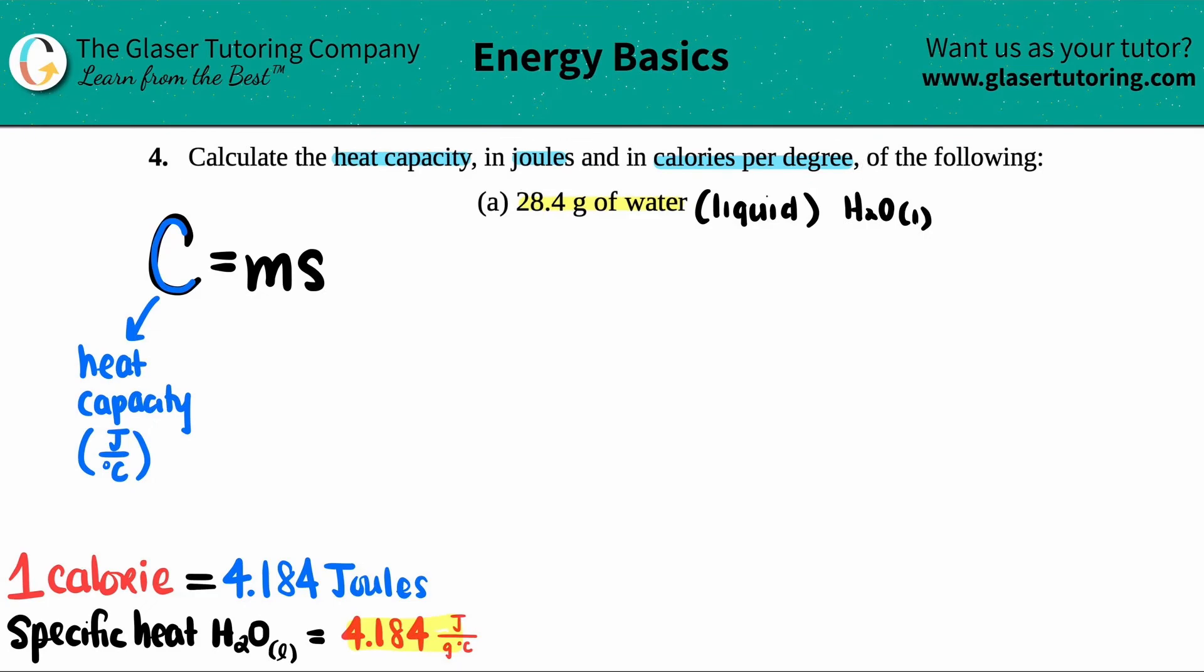Then we've got to convert to calories. The m stands for mass, and if we're using this formula the mass has to be in grams. The s stands for the specific heat, which is specific for each individual compound or element.